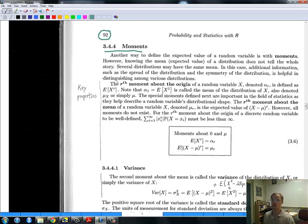We have a definition, the r-th moment about the origin. It's the expected value of x raised to the power r. So when r equals 1, then it's just E of x, and that gives us our first moment. The book is going to call that alpha sub r. I haven't seen that a lot. It's not critical notation.